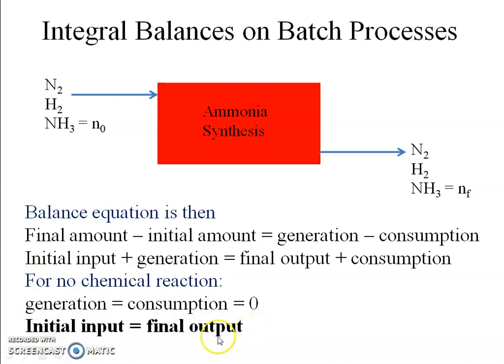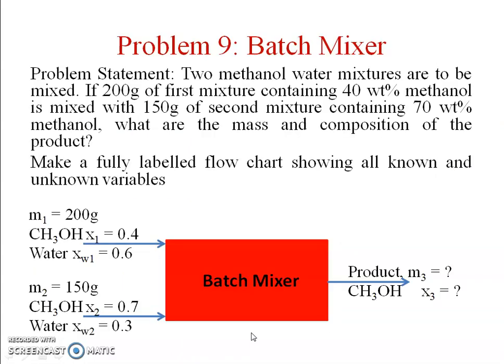So the equation we are going to use is: initial input = final output. This is the integral balance on a batch process without any chemical reaction. Let's directly apply it to a problem of a batch mixer.